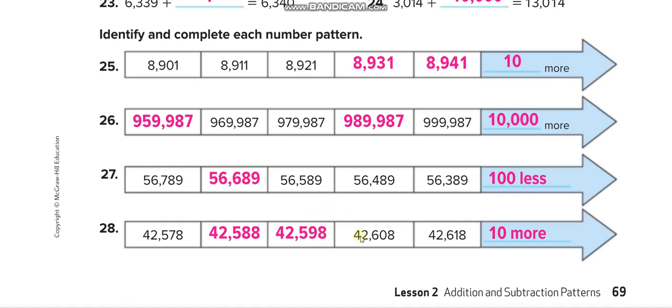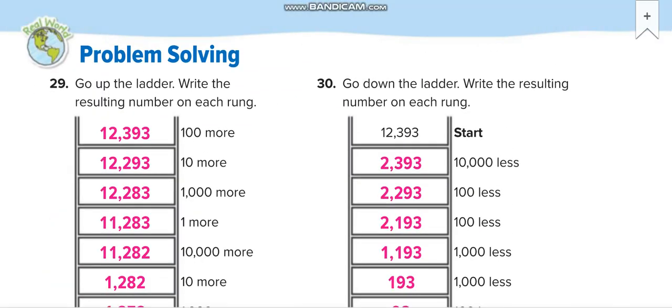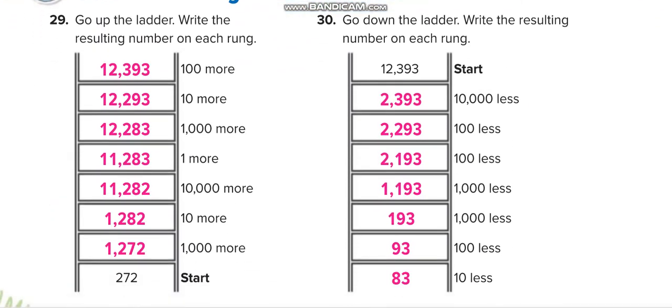Then it was 42,598, so when you add 10 more it becomes 608 and 618. Next page. Okay, this one, very simple. And this one you will see the numbers from here and keep on adding.